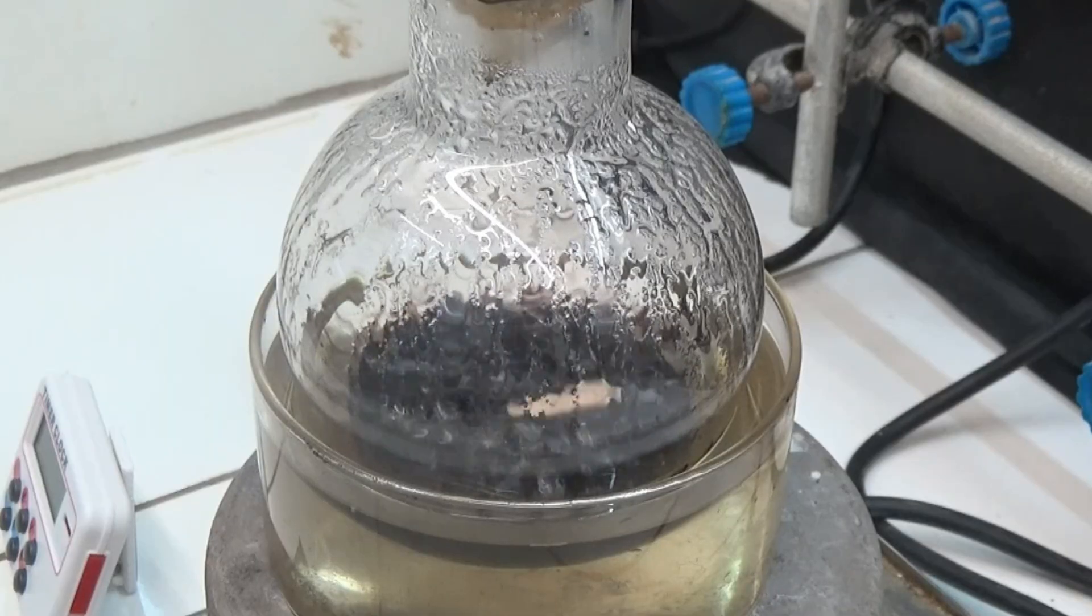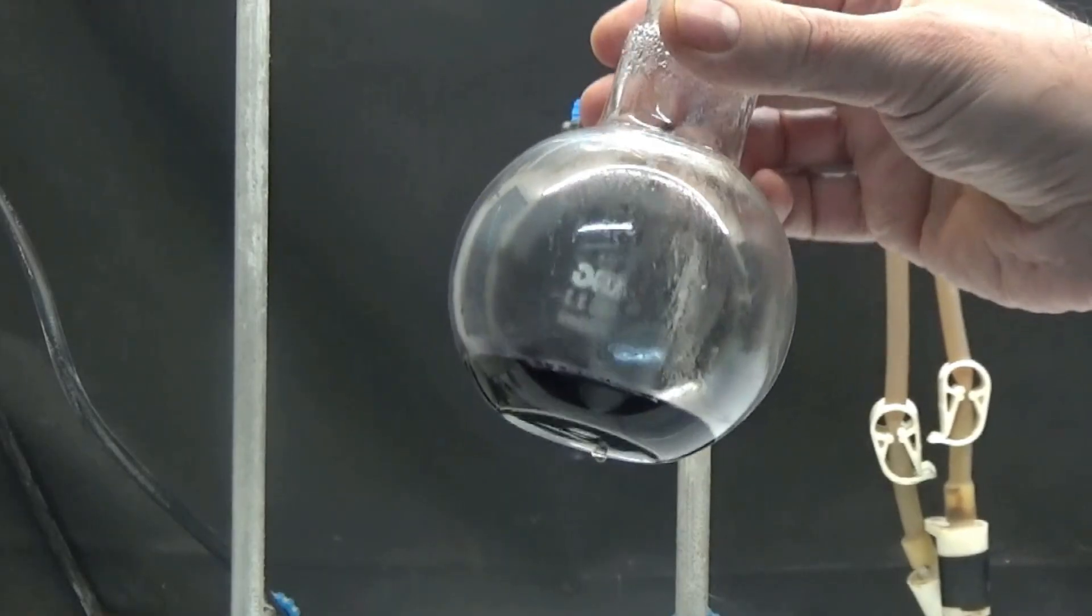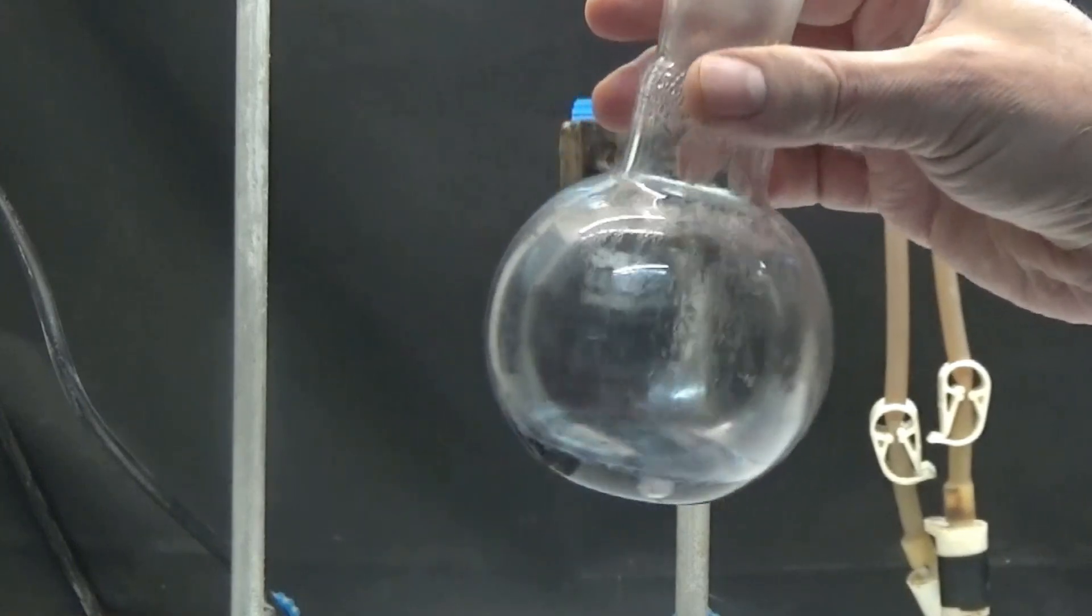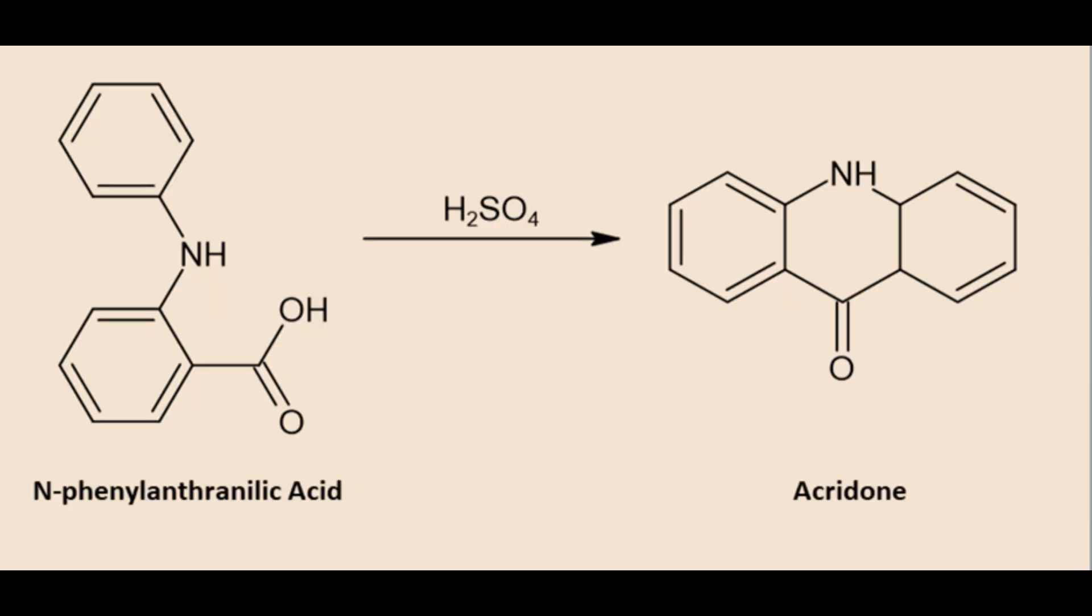For this synthesis, we are going to use the phenylanthranilic acid obtained in one of the videos of my channel. Acridone is obtained by cyclizing phenylanthranilic acid by the action of sulfuric acid with loss of a water molecule.